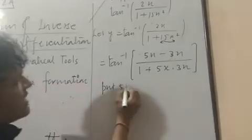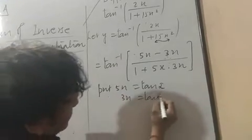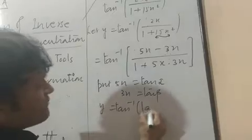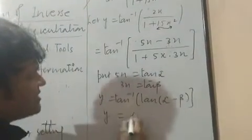Now, put 5x as tan alpha, 3x as tan beta. So I have done tan inverse tan of alpha minus beta. Tan inverse tan is done. Alpha minus beta. Replace the value and differentiate. Clear? One more thing.